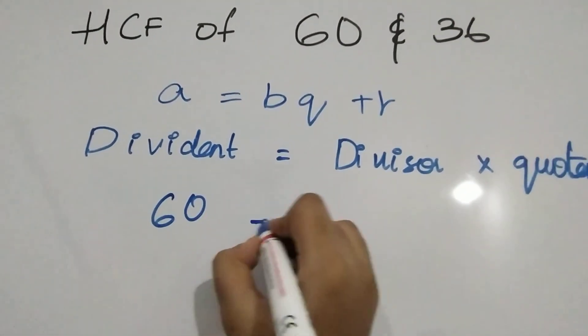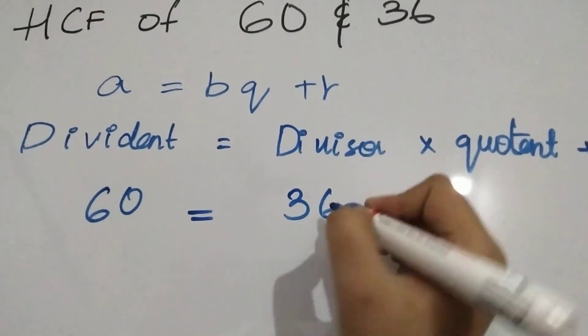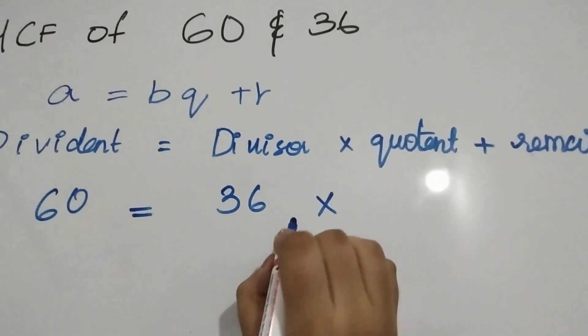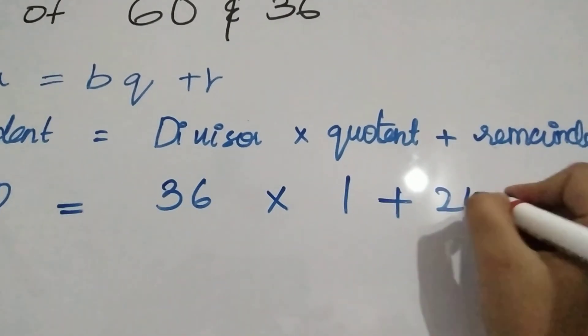I am going to write 60 is equal to 36 into, it goes one time, 24 is the remainder.